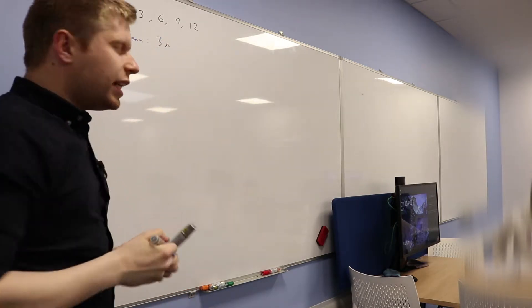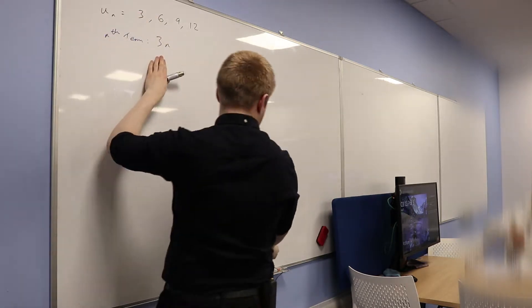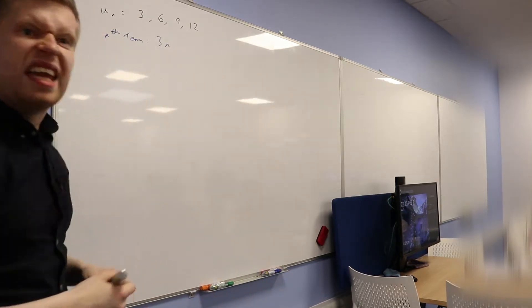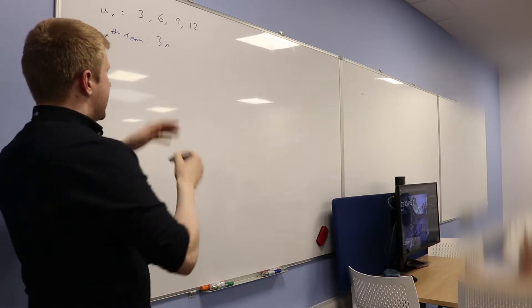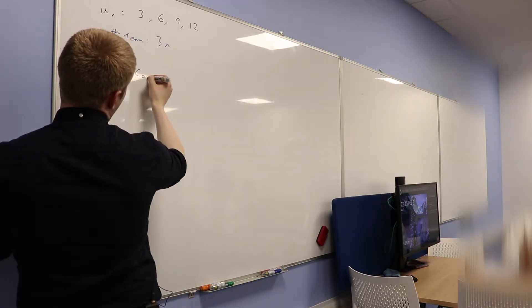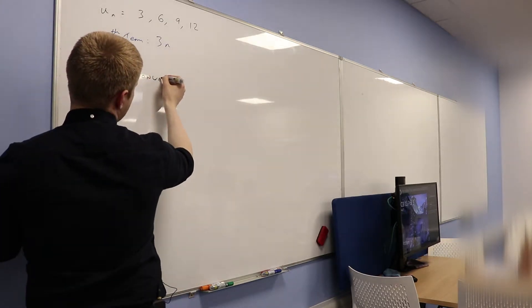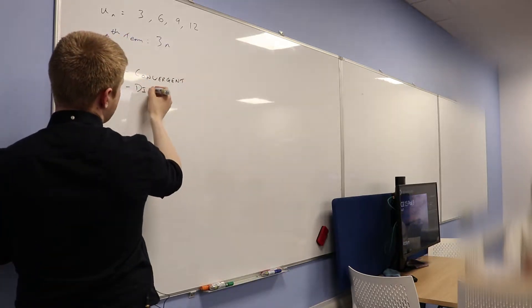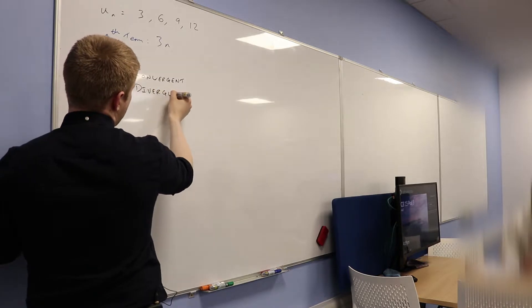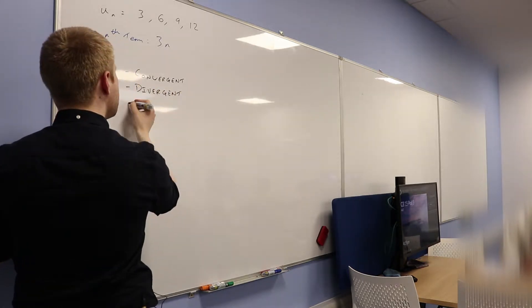All right. Now, here's my question. So this would be un. Un would just be 3n, if you like. Here's my question. Is this convergent? Is this divergent? Or is this periodic?